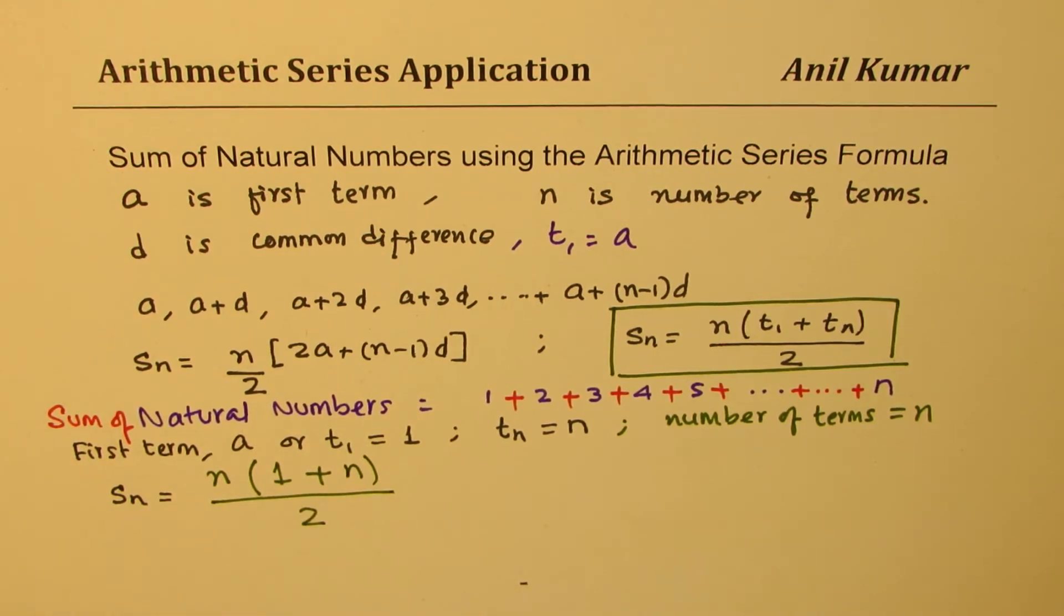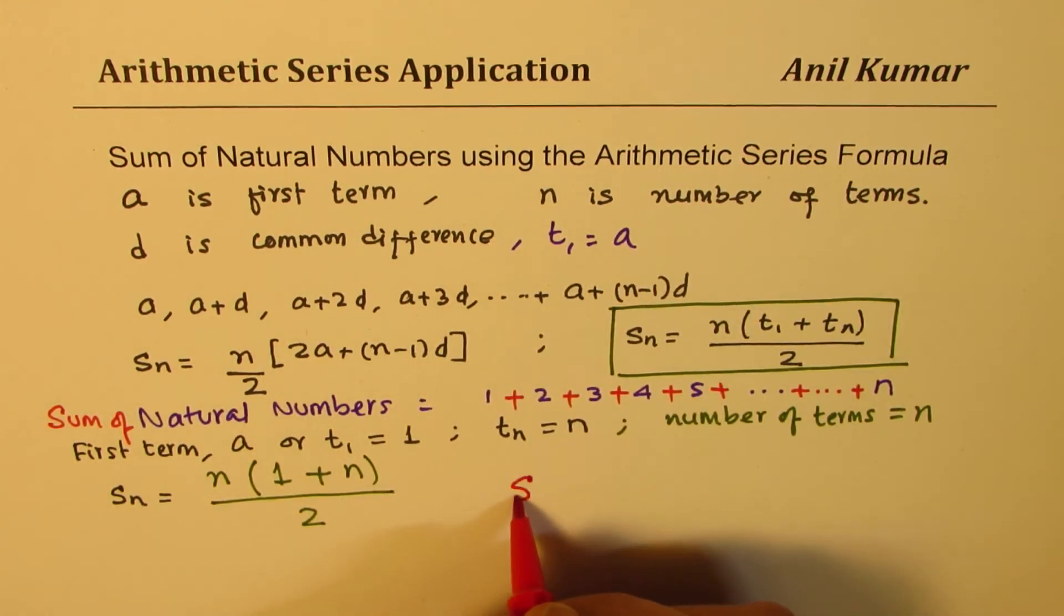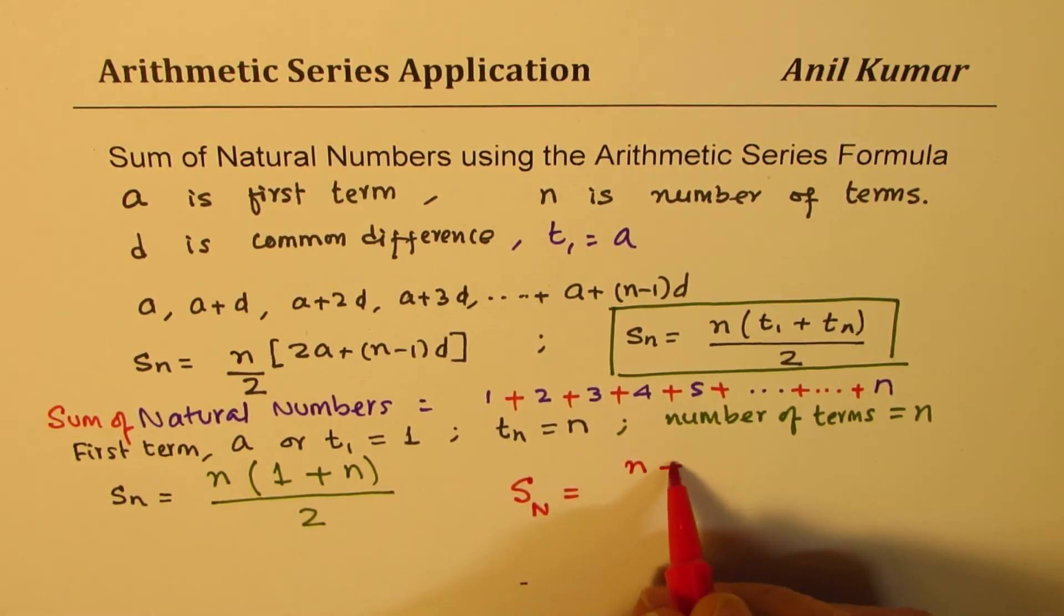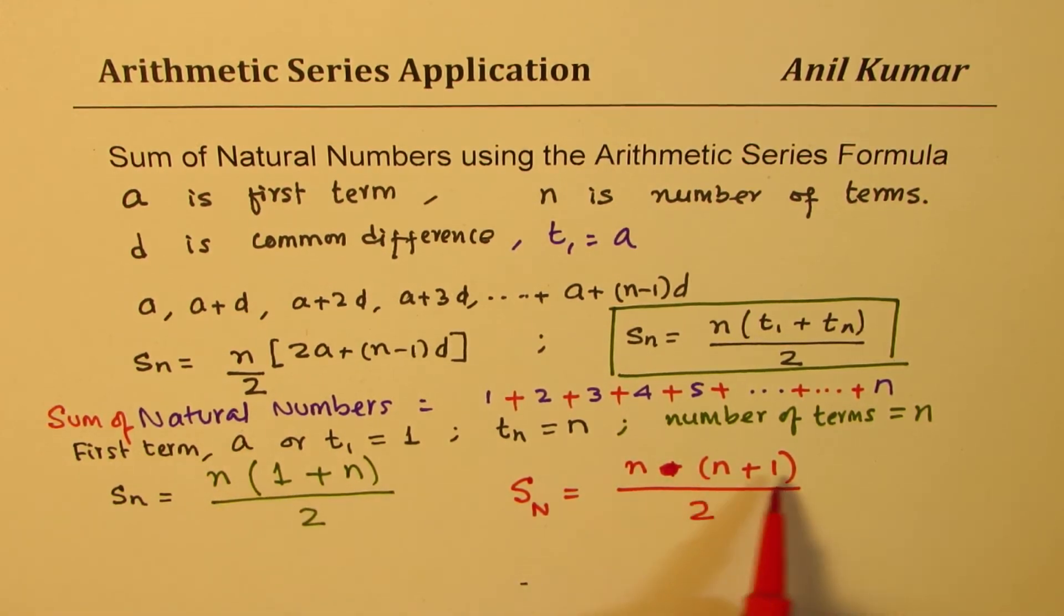So that becomes the formula for us. In general, the sum of natural numbers could be written as sum of natural numbers, all natural numbers, is n times n plus 1 divided by 2. So this is multiplication, n times n plus 1 divided by 2, where n is all natural numbers.